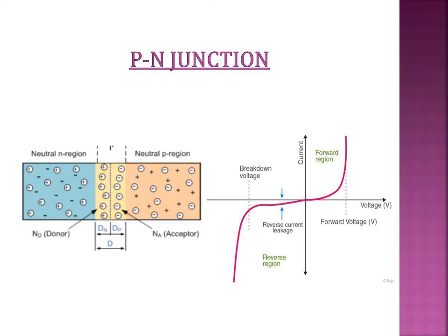Because of this concentration gradient, diffusion of electrons from N-type to P-type and diffusion of holes from P-type to N-type occurs. This process goes on and as a result of this movement of charge carriers across the junction, a voltage is built up. This voltage is called barrier potential and it is dependent on the semiconductor material used to fabricate the device.